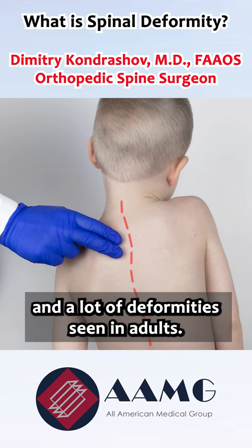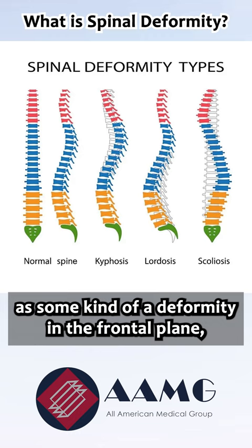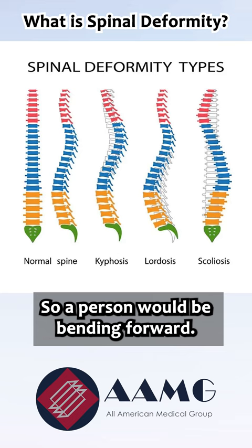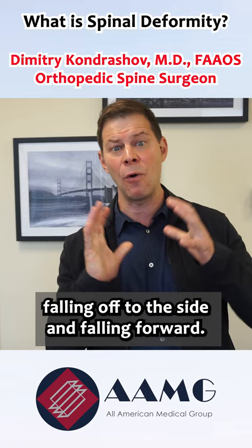Typically, you can think of it as some kind of a deformity in the frontal plane, which is what scoliosis is, or deformity in a side plane, which is inability to stand upright — so a person would be bending forward. Of course, you can have a combination of falling off to the side and falling forward.